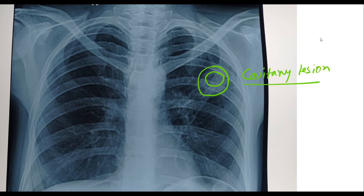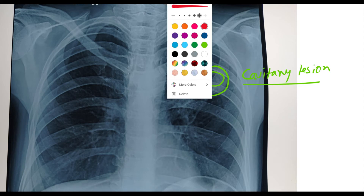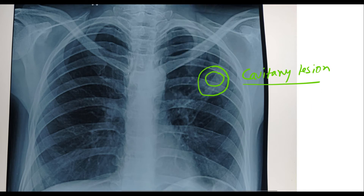So the next question: what are the cavitary lesions found on the chest X-ray? Causes of cavitary lesions on chest X-ray, according to importance in the perspective of Bangladesh: number one, pulmonary tuberculosis; number two, abscess — that is, lung abscess.